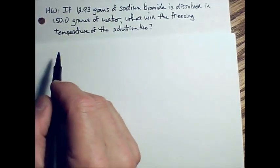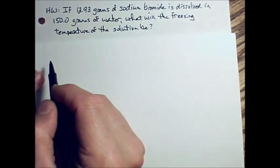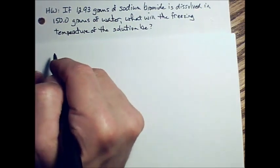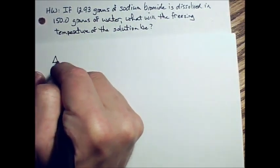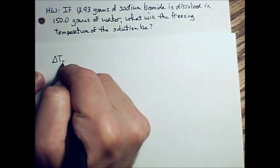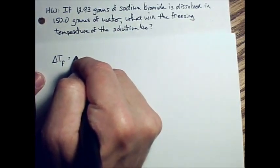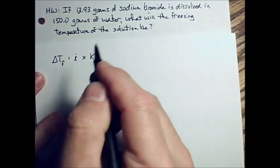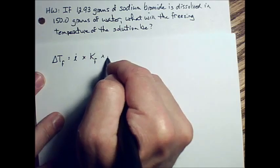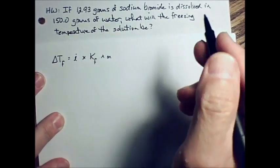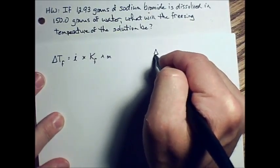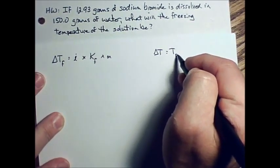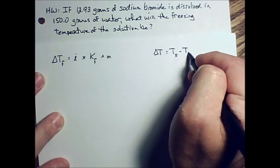In order to solve this problem, we need a couple of equations we learned about yesterday. We need this equation: change in temperature of freezing is equal to the Van't Hoff factor times the freezing point constant for water times the molality of the solution. And we need the equation where we have the change in temperature is equal to the final temperature minus the initial temperature.